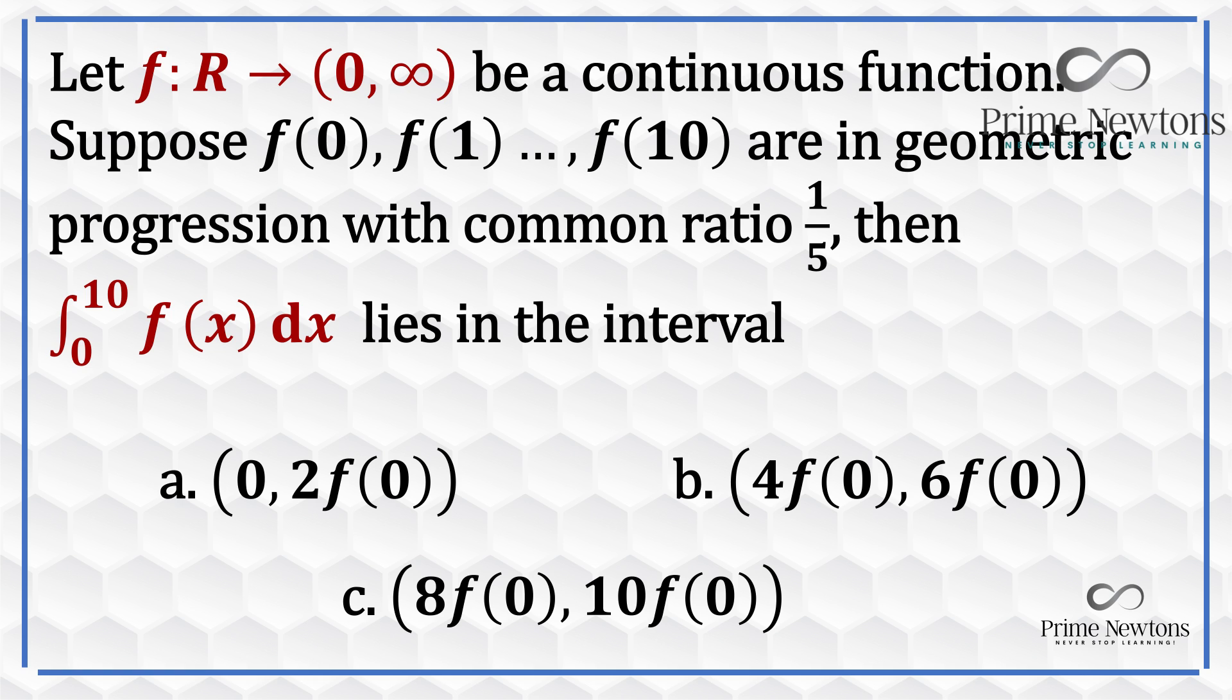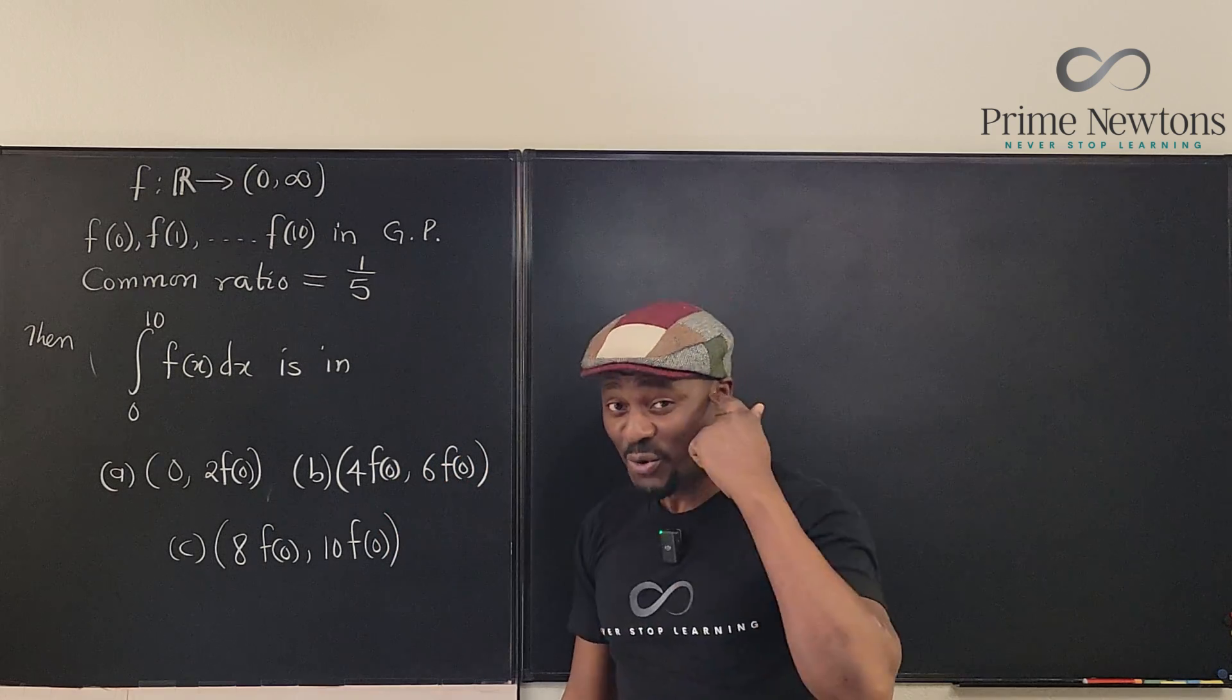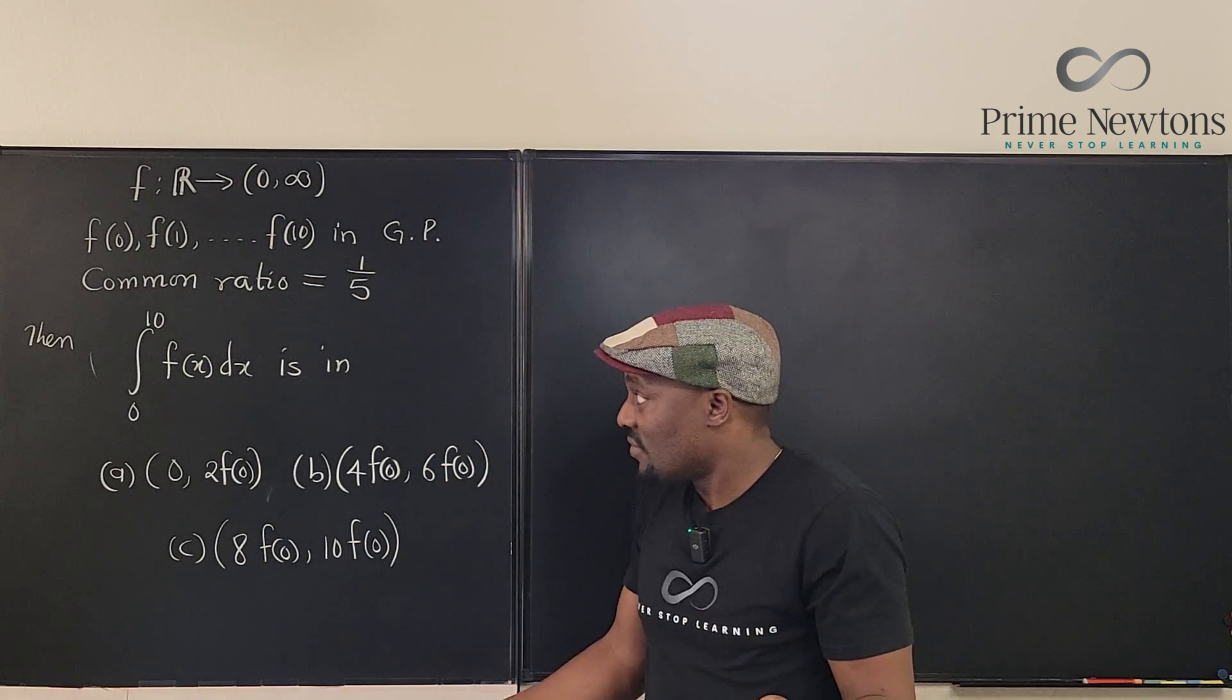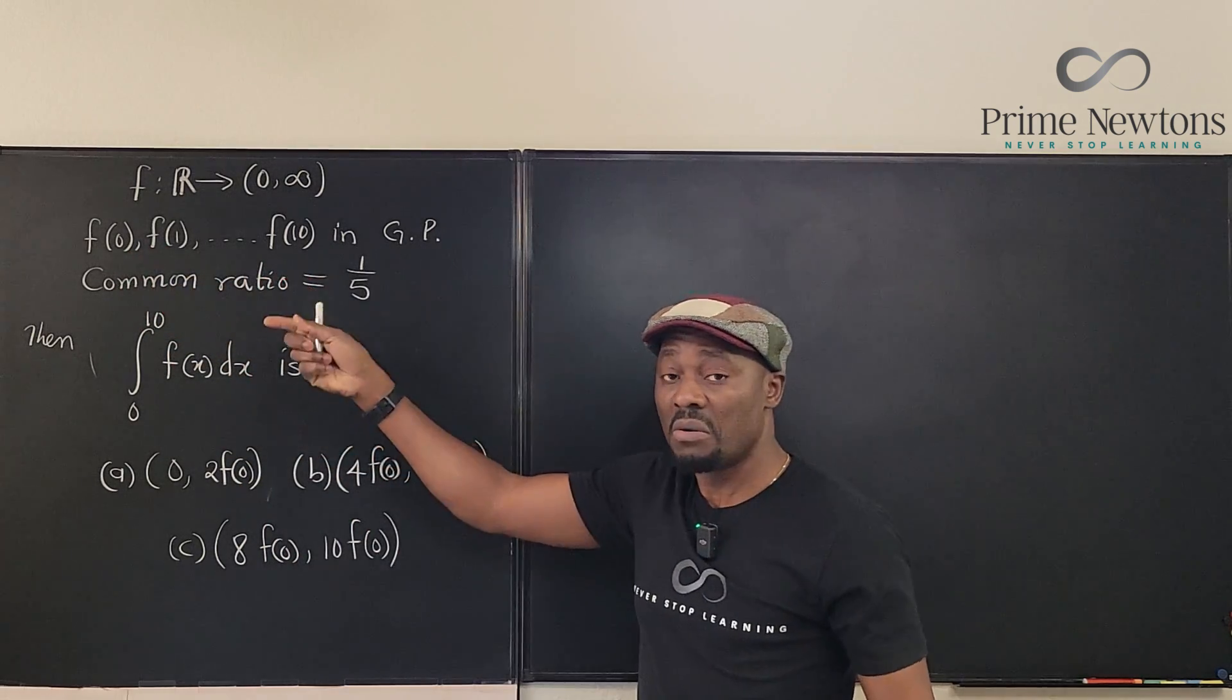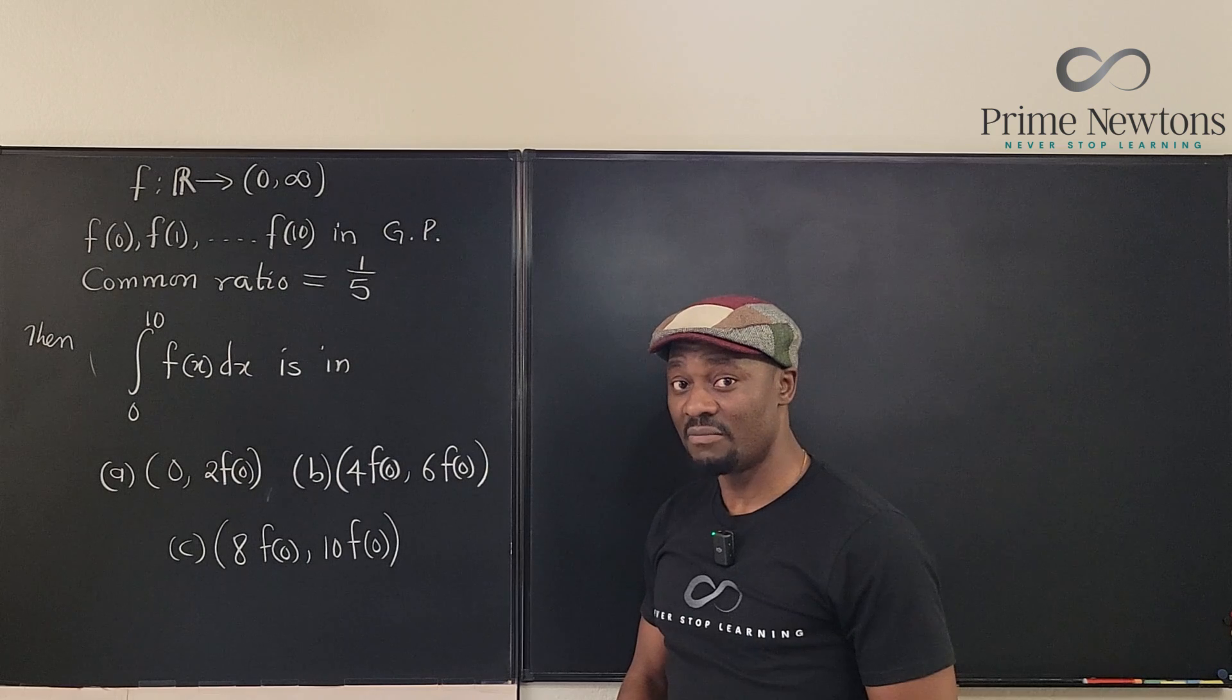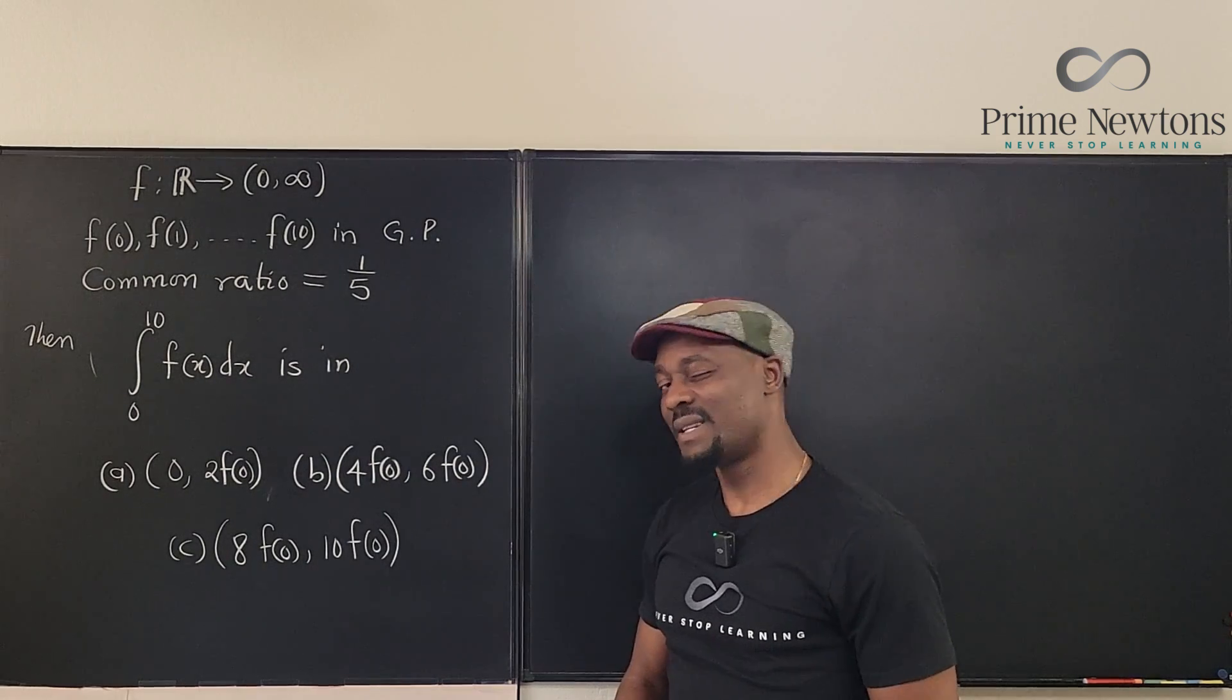Now this is gonna be a geometric sequence with a common ratio of one-fifth. We're supposed to show that this integral lies in one of these intervals. We just need to know which one. When you get a question like this, your brain should start thinking of Riemann sums because they're giving you the actual values. Let's get into the video.